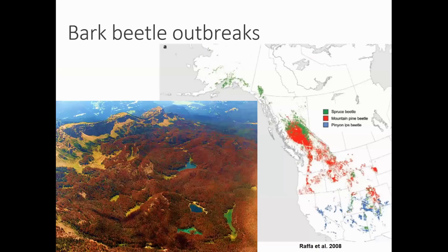Due to fire suppression and several other factors, we're seeing densification of these forests, and now when ponderosa pine forests burn, they can often support much higher intensity wildfire. Bark beetle outbreaks are also changing — even though these are native beetles, individual outbreaks are lasting longer than historically, moving further north into Canada, and occurring at higher elevations. So we're seeing changes in disturbance regimes from both fire and bark beetles.